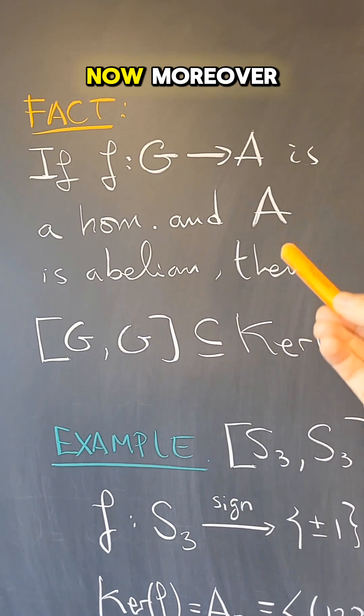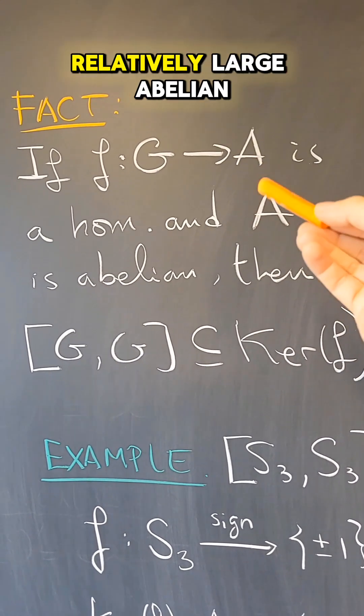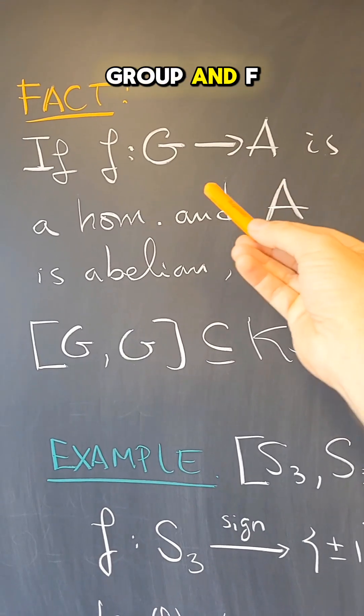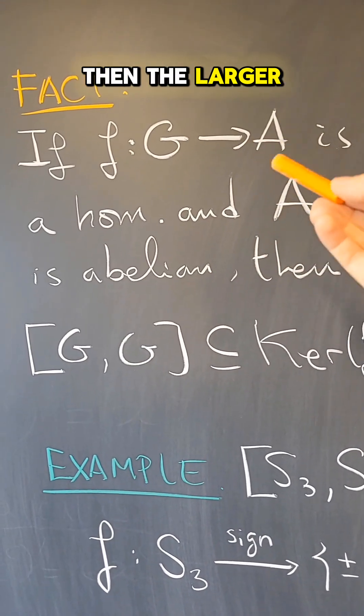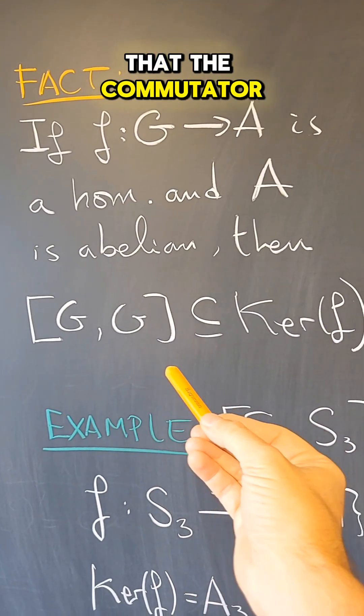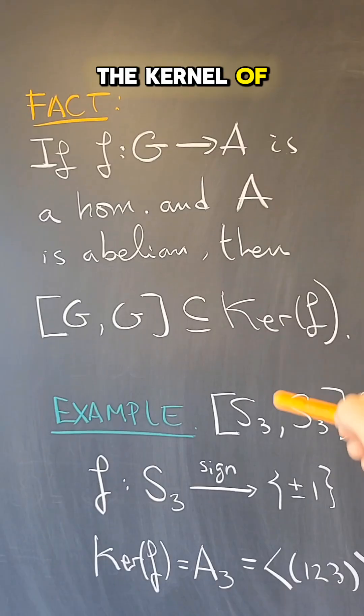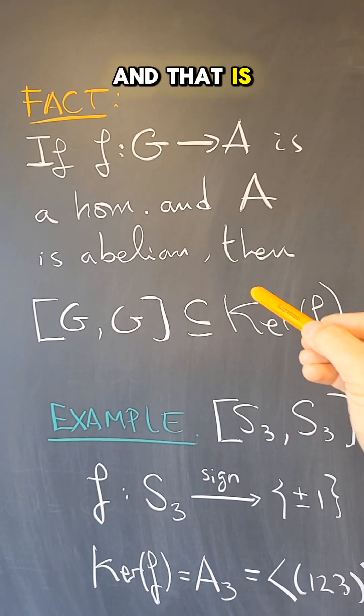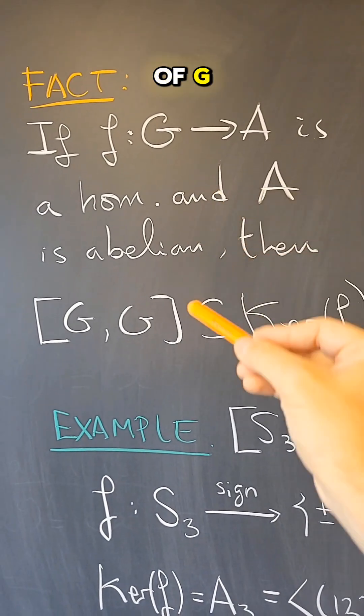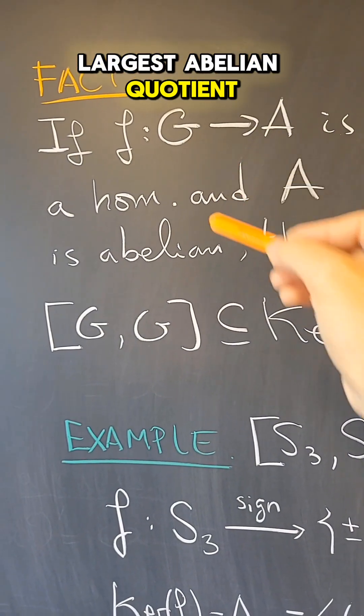Moreover, if A is a large or relatively large abelian group and F is surjective, then the larger A is, the more chances you have that the commutator subgroup is actually identical, is equal to the kernel of that homomorphism. And that is because the quotient of G by the commutator subgroup is the largest abelian quotient of G.